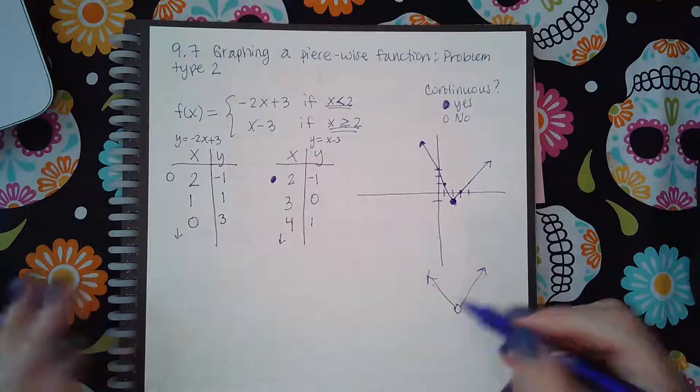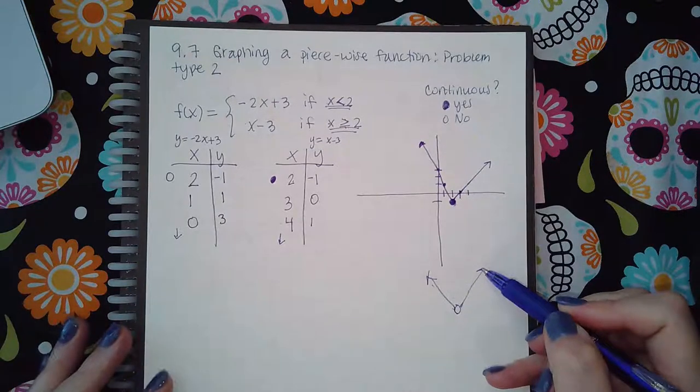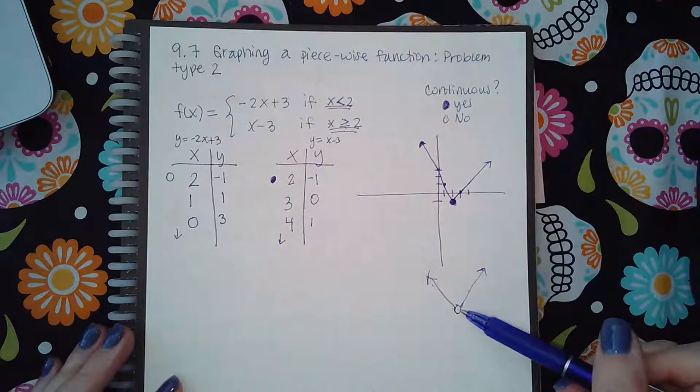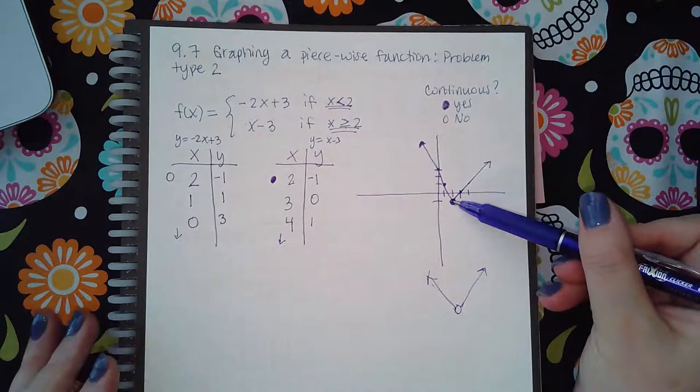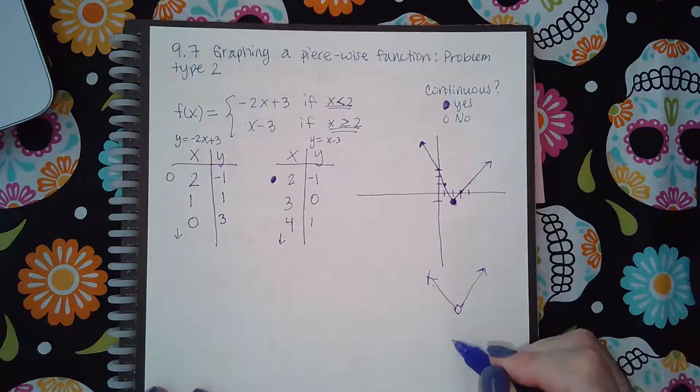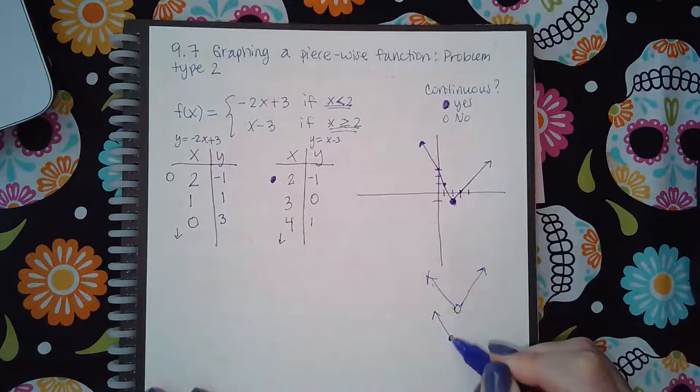So it's very important that you understand that if it's connected with a solid dot it's good. If it's not connected then it is not continuous. Sometimes you might have one piece of the graph here and then another piece of the graph down there.